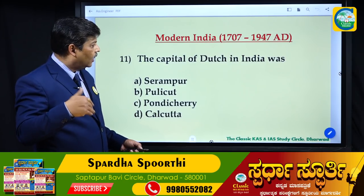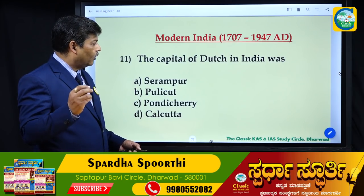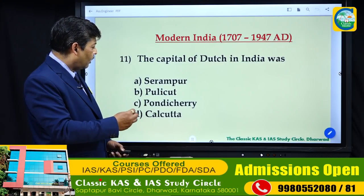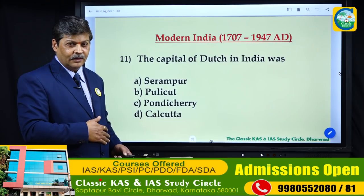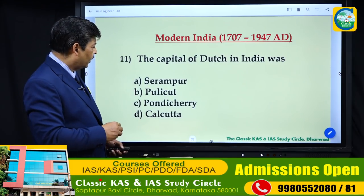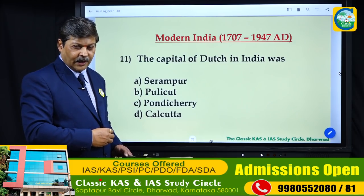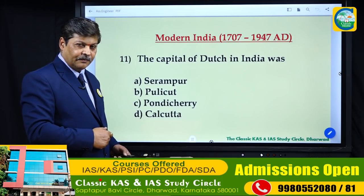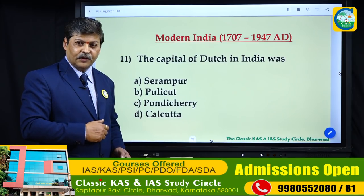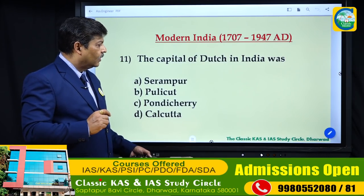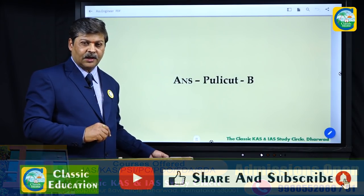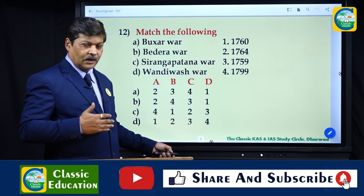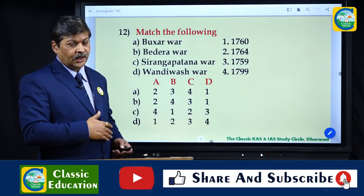Now coming to modern India. The capital of the Dutch in India — Cochin was the capital of the Dutch in India.